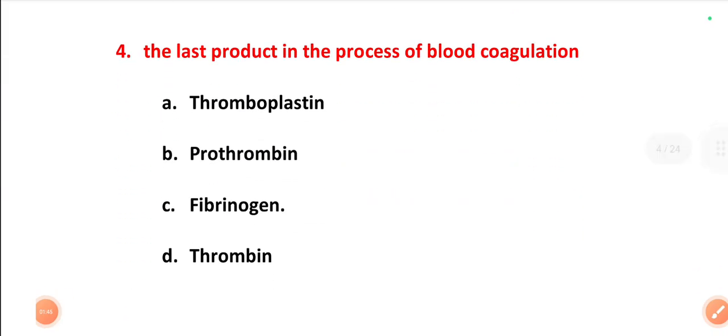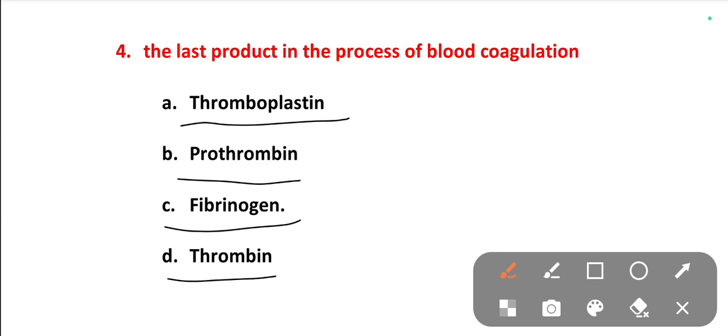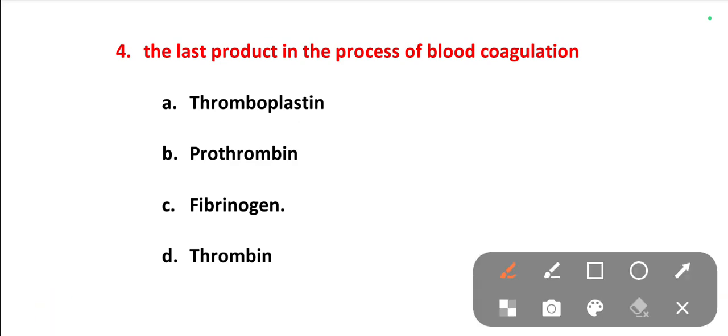The last product in the process of blood coagulation. Options are thromboplastin, prothrombin, fibrinogen, thrombin. The right one is fibrinogen. Fibrinogen is the end product of the blood coagulation process.